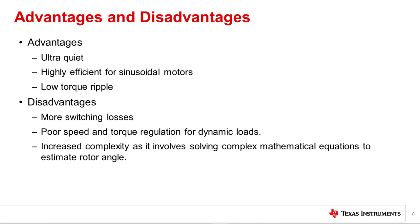In terms of downsides, the sinusoidal commutation has higher switching losses compared to trapezoidal commutation. The speed and torque regulation for dynamic loads is poor as there is no feedback loop to regulate speed or torque. Sinusoidal commutation is complex to implement as it involves solving complex mathematical equations to estimate back EMF voltage and rotor angle.